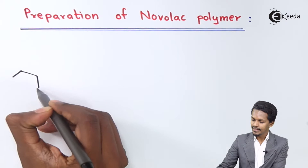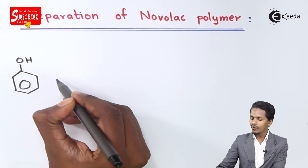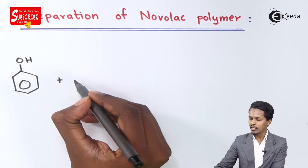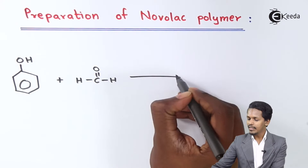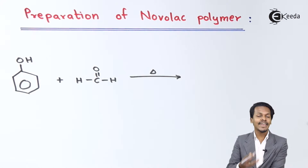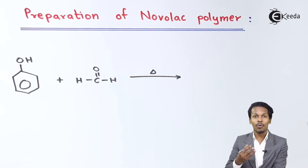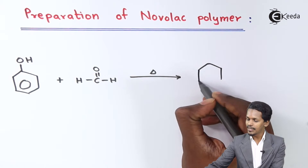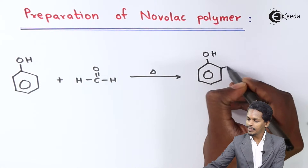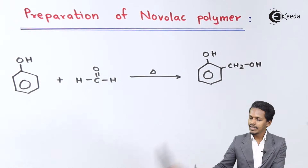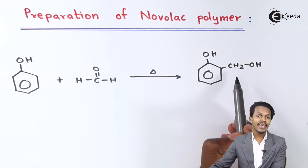To prepare Novolac polymer we need certain chemicals. We are considering phenol, and we have to react it with formaldehyde, which can be written as HC double bond OH. When phenol is reacted with formaldehyde, we get a mixture of products. One of them is ortho-hydroxybenzyl alcohol, where there is a CH2OH group.